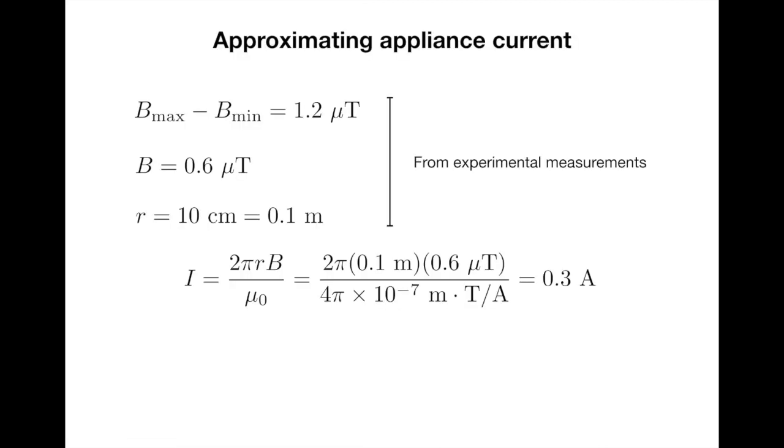We'll now estimate the current through the electric kettle. We start by looking at the peak-to-peak change in the magnetic field, which we measure to be 1.2 microtesla. This implies that the amplitude of the magnetic field is going to be 0.6 microtesla, and we estimated the distance between the magnetometer and the center of the appliance as 10 centimeters or 0.1 meters. We will now invert the Biot-Savart law, as shown here, and substitute in the values from our experiment to determine the current inside the appliance. In this case, 0.3 amps.